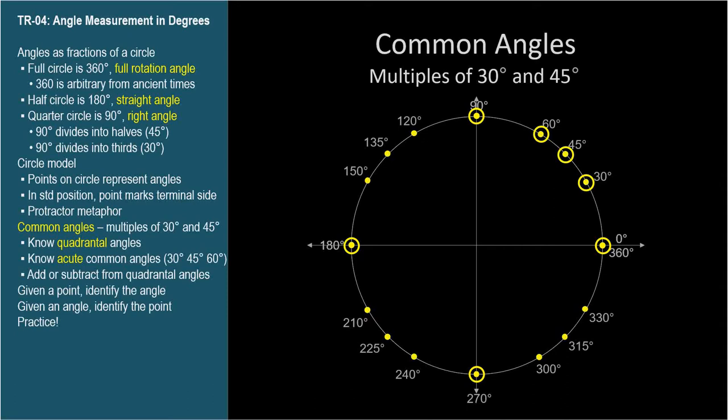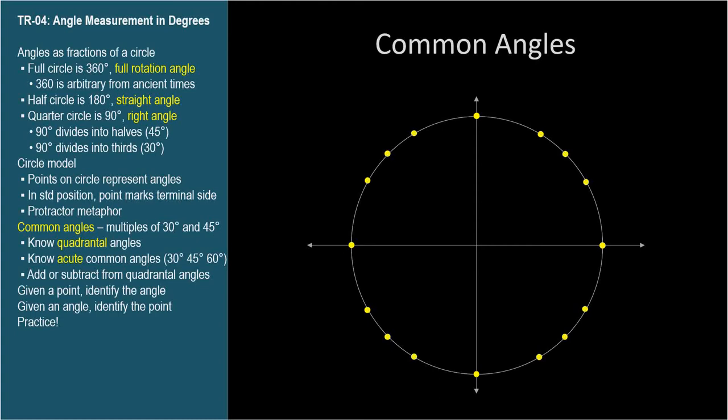To find an angle of interest, we're going to start with a nearby quadrantal angle and add or subtract an acute common angle. For example, what angle does this point represent? Well, it's 180 degrees minus 30 degrees, so 150 degrees.